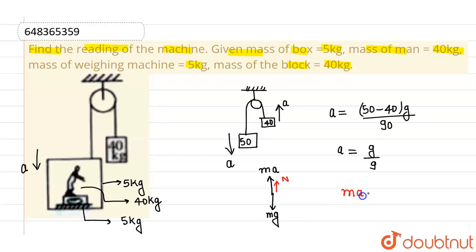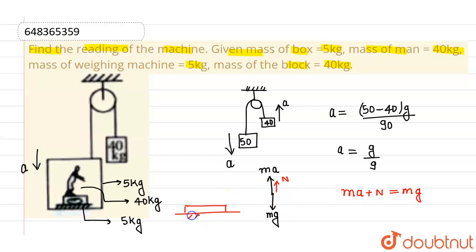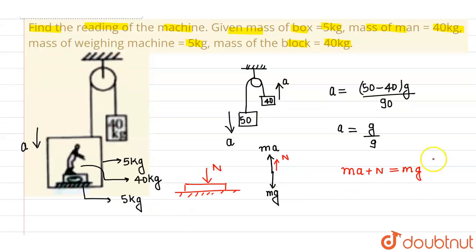So we can write: ma + N = mg. The same normal force N acts on the weighing machine itself. Solving for N, we get N = m(g − a).